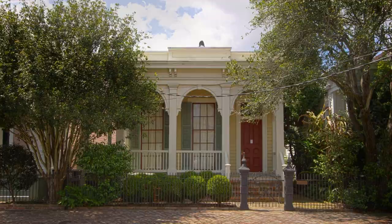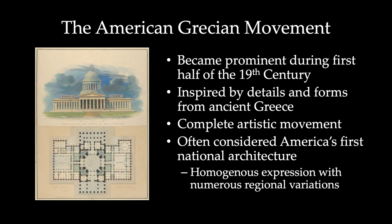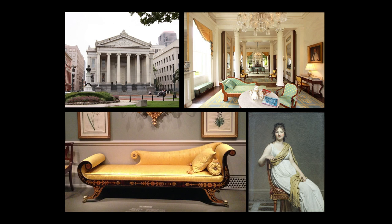When referring to the Grecian movement in the States, we are referring to an artistic movement that became prominent in the first half of the 19th century, inspired by details and forms from ancient Greece. It was a complete artistic movement, and is now often considered a national architecture, connecting places as culturally different as New Orleans and Boston, and buildings as different as a smokehouse and a state capital — overall allowing for a homogenous national architectural language, despite its numerous regional variations. These images represent what I meant by a complete artistic movement, showing how it affected architecture, furniture, clothing, painting, and other decorative arts.